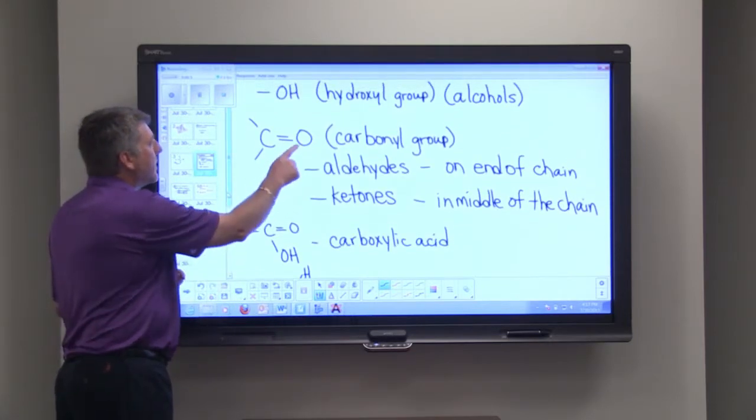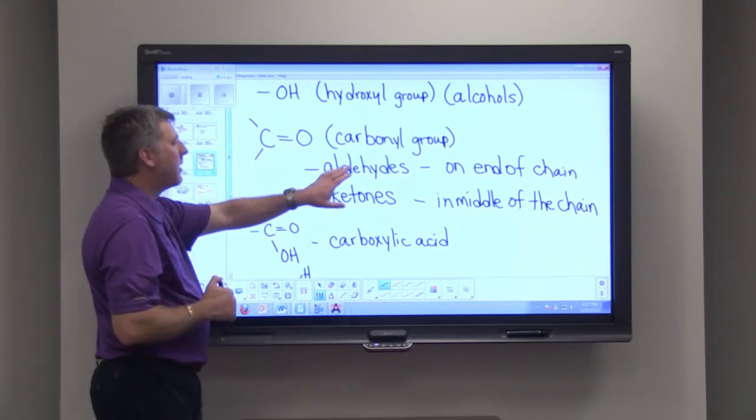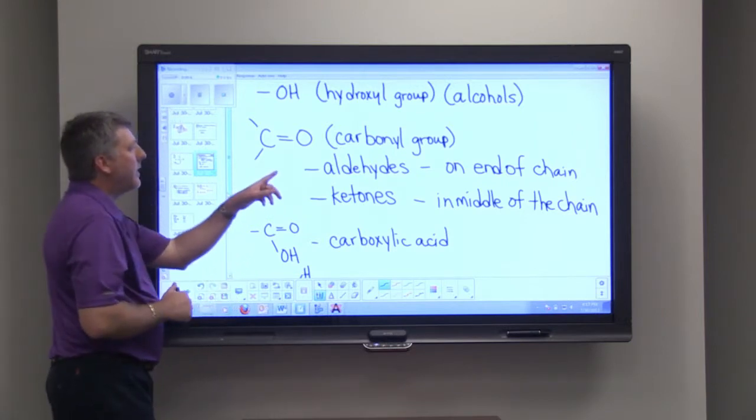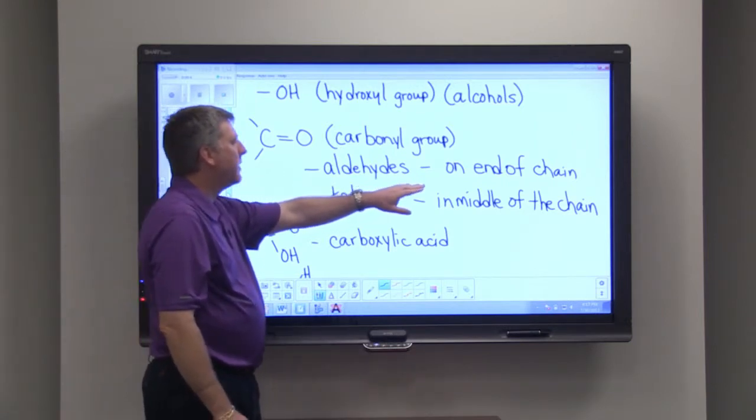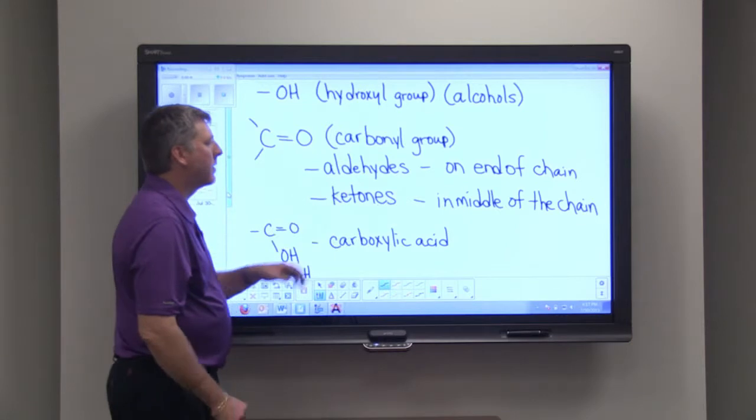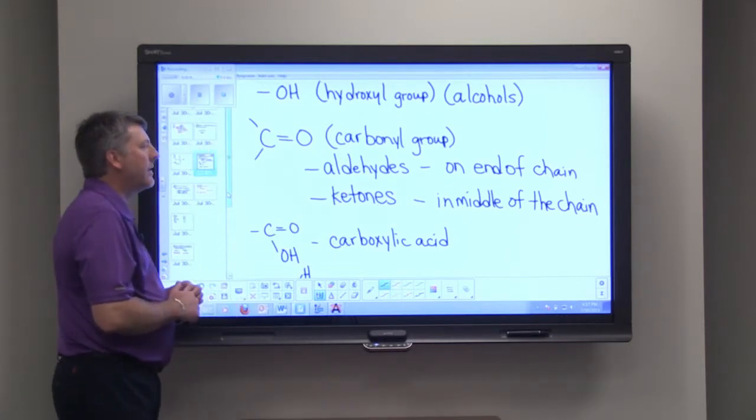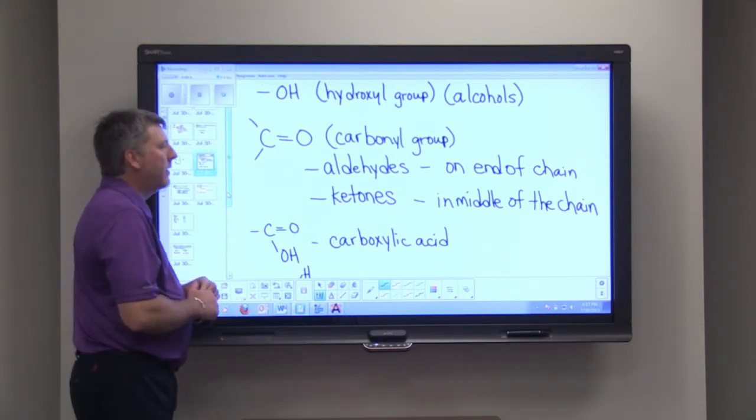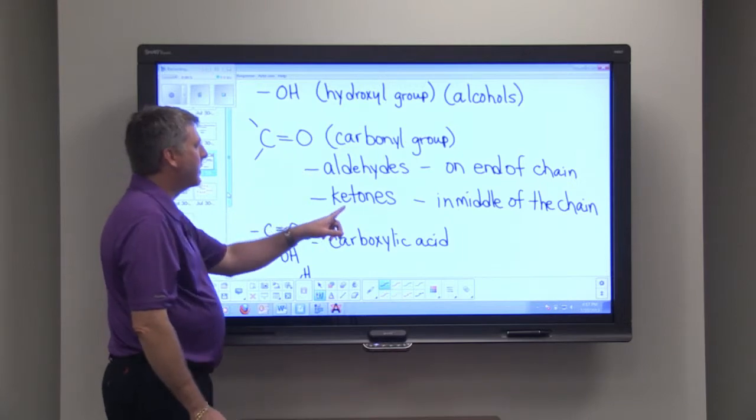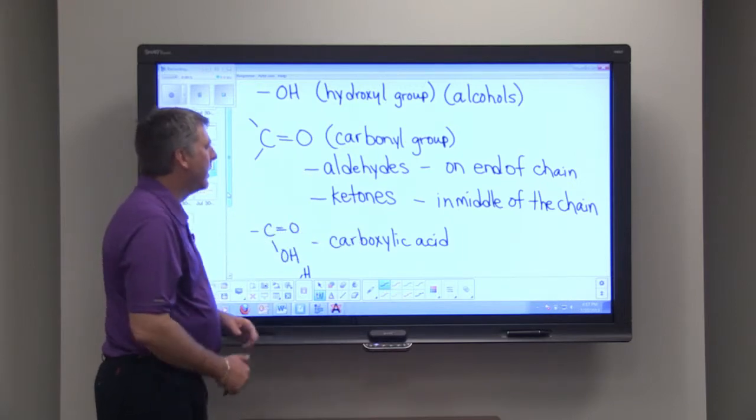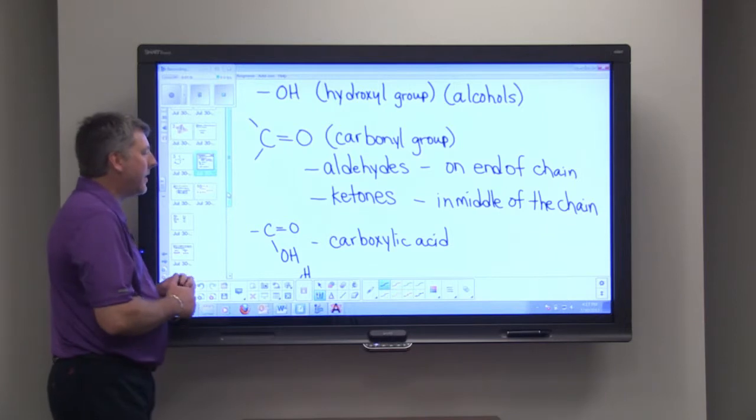Another group is a double-bonded oxygen attached to a carbon, and this is called a carbonyl group. If the double-bonded oxygen is at the end of a chain, then that particular substance is called an aldehyde. If that double-bonded oxygen is in the middle of the chain, or it is not on the end, then that's a substance called a ketone.